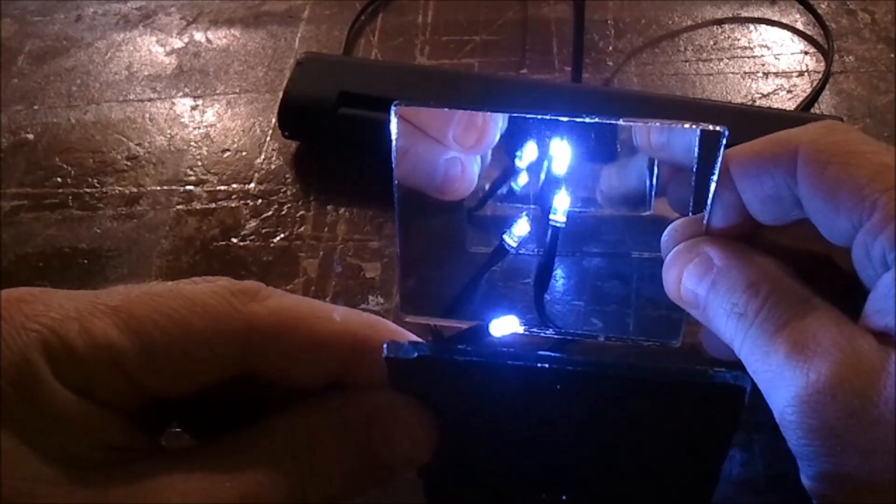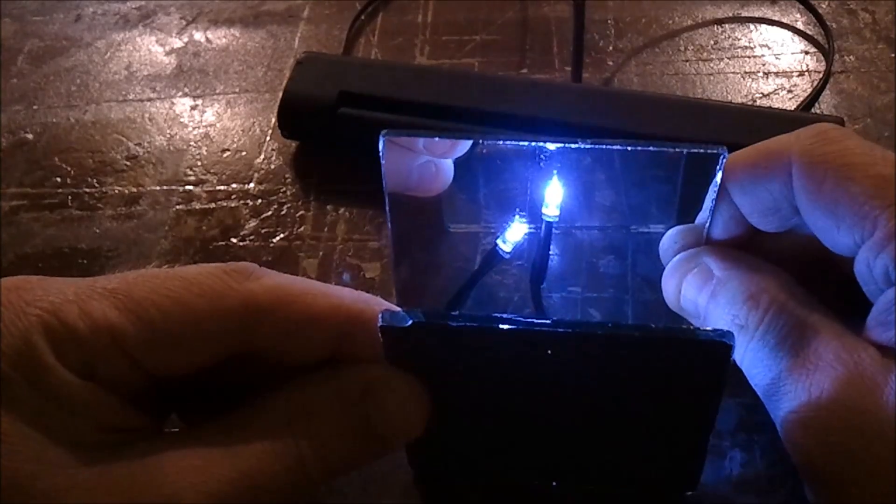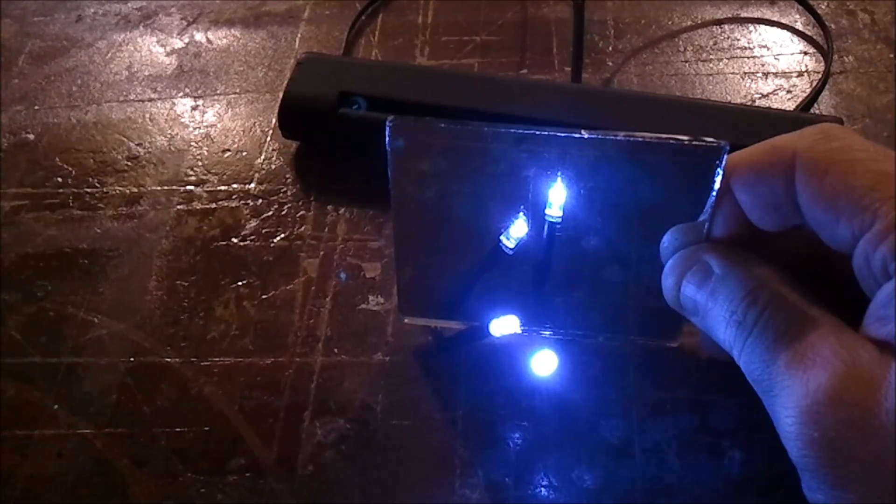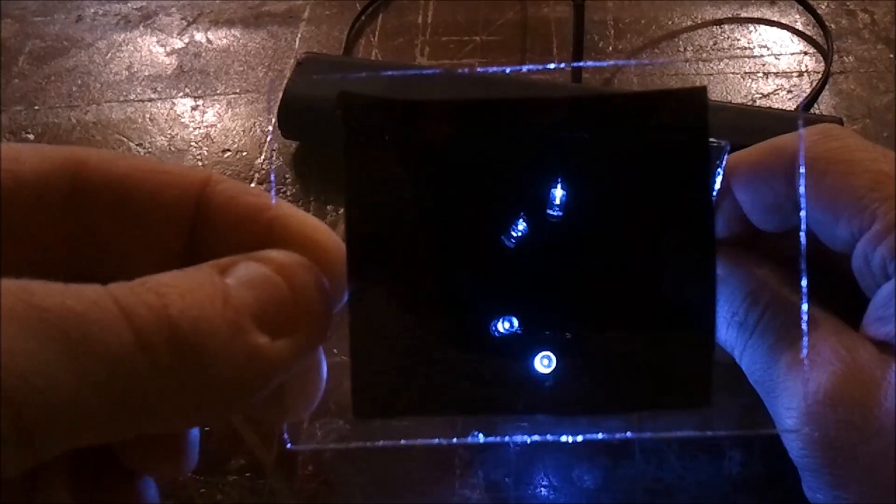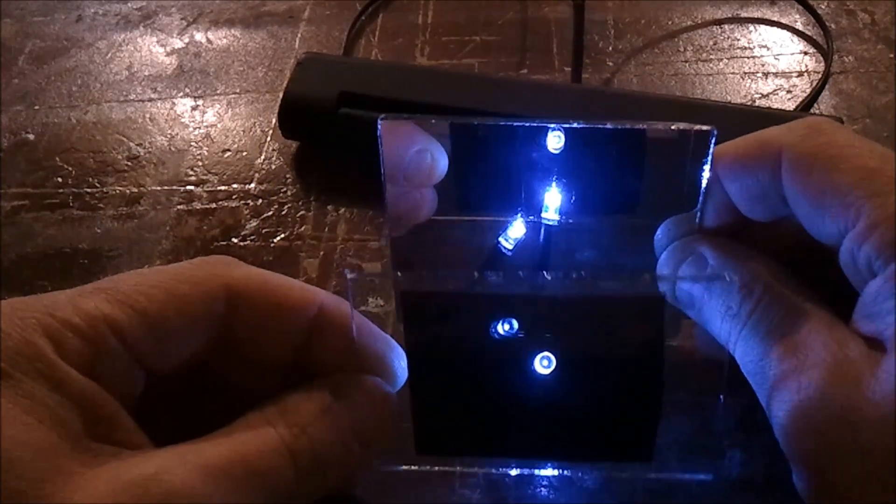But if you were to replace one of those mirrors with a partially reflective mirror, what some people refer to as a one-way mirror, it allows you to look at these reflections straight on instead of only at an angle. This is the basis for the infinity mirror, and this idea has been around for some time.